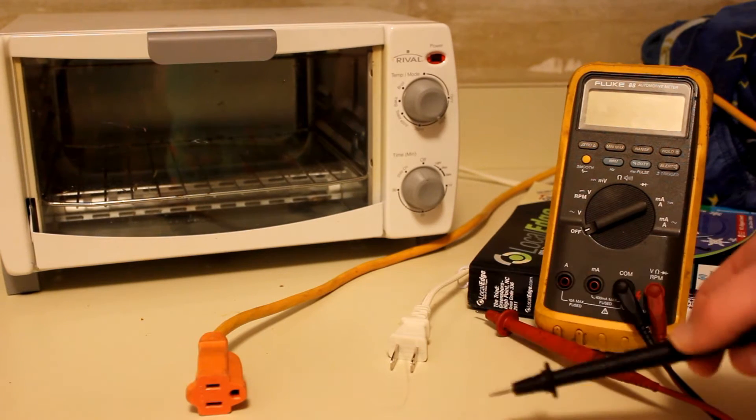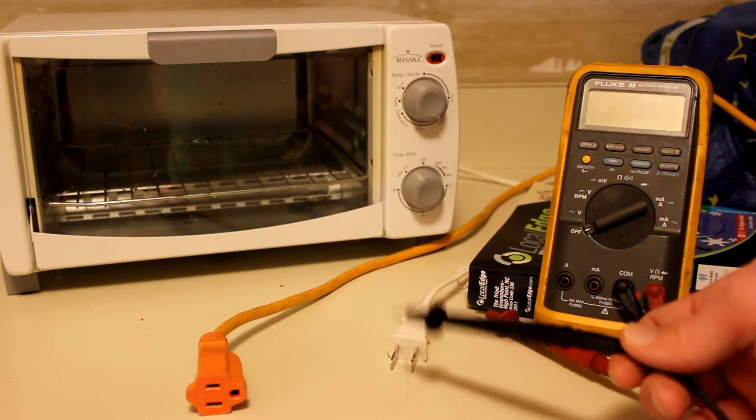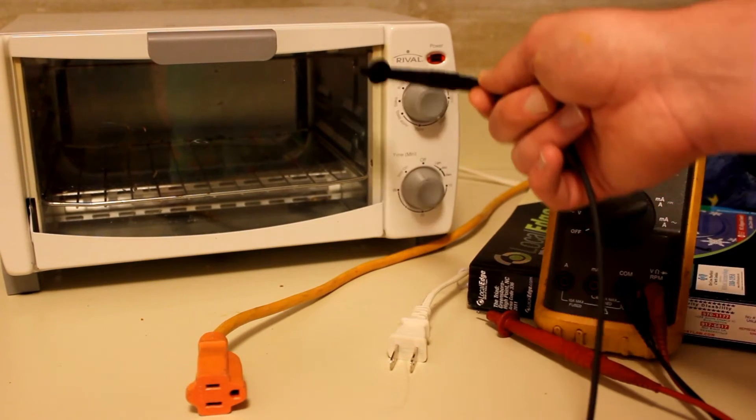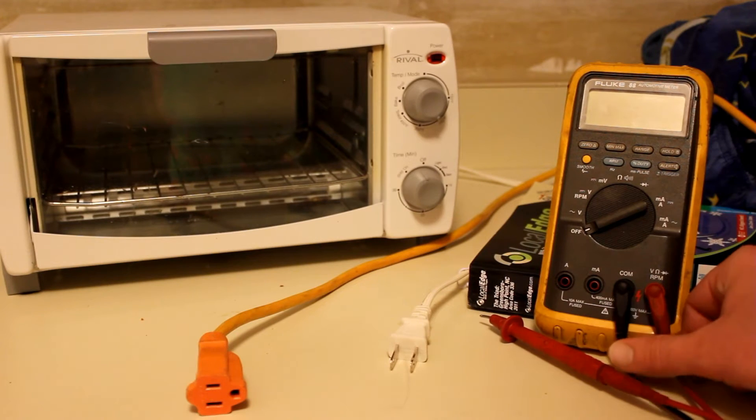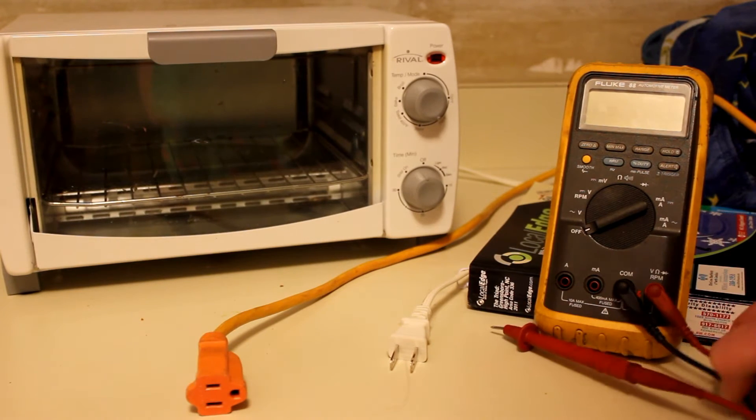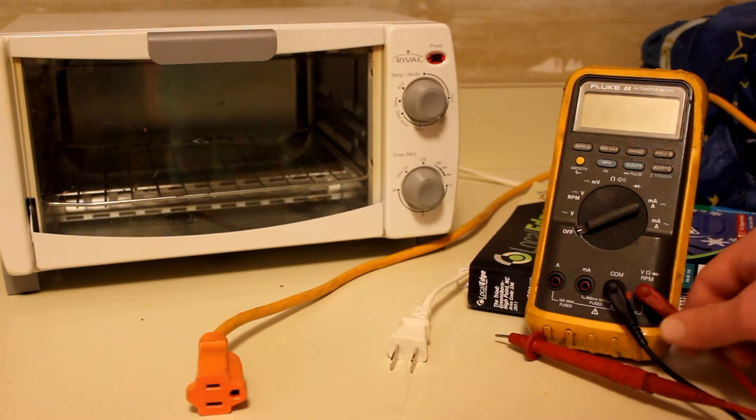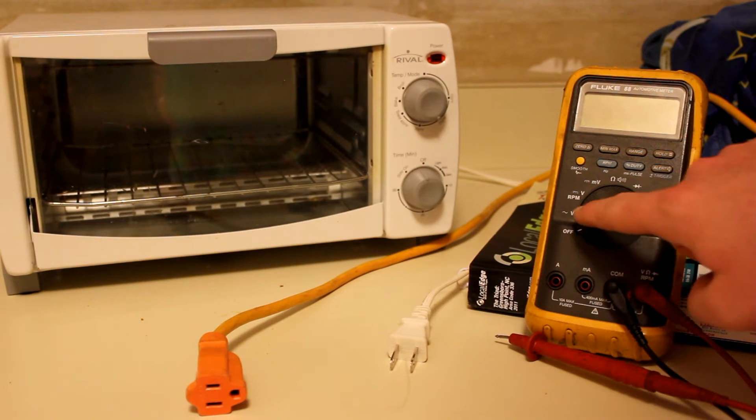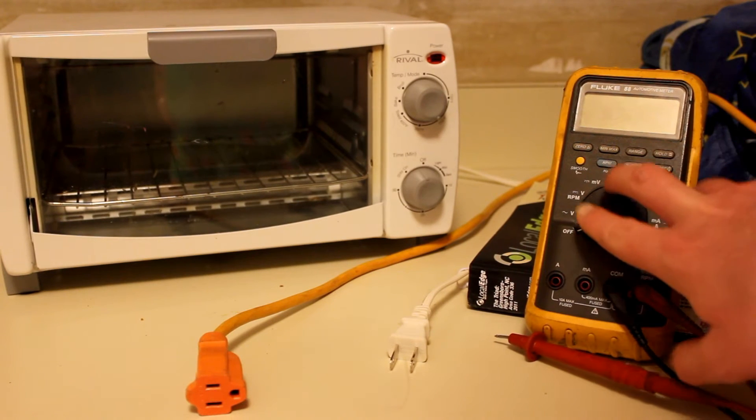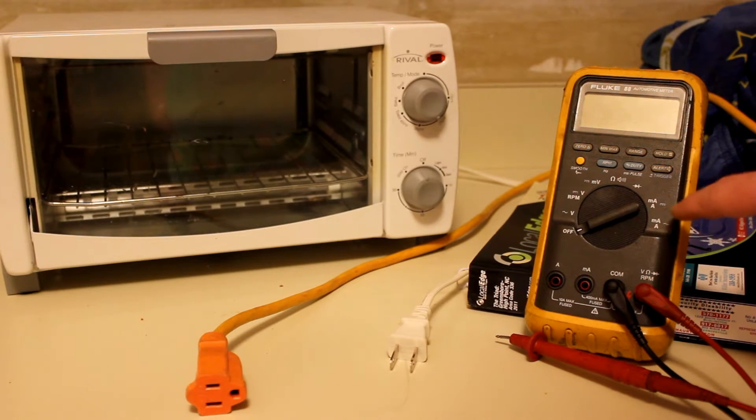I'm going to go ahead and show you—we're going to do resistance here real quick on this toaster oven. There's different ways, and I believe even for the cheap one, there's a different way you set up the meter for resistance and volts. Those two will be the same, and then there's a different way for amps.